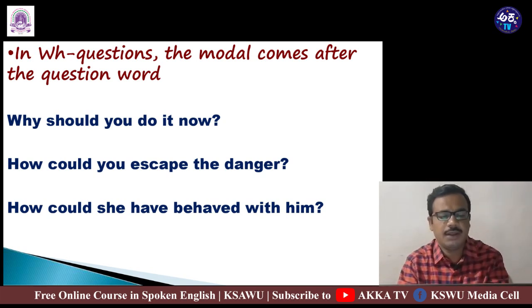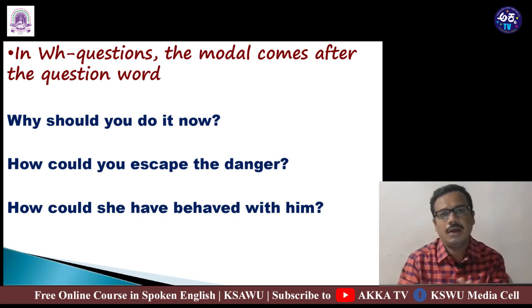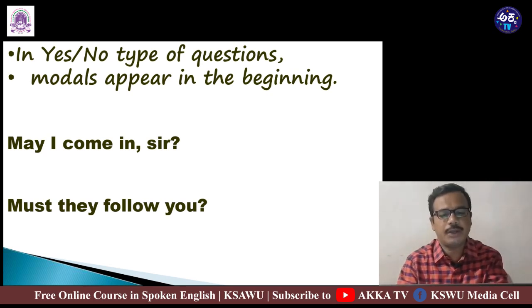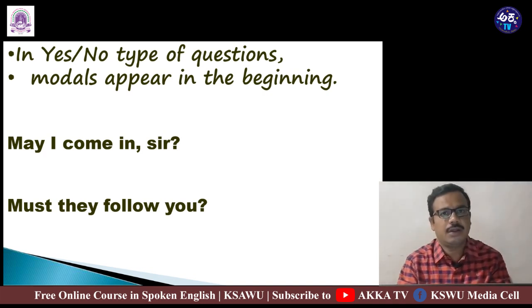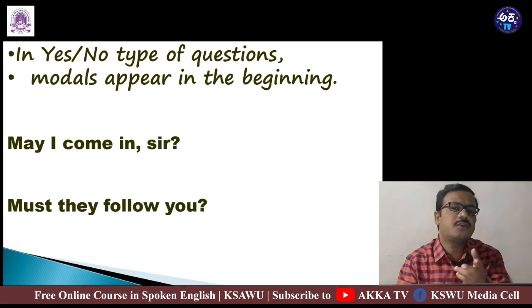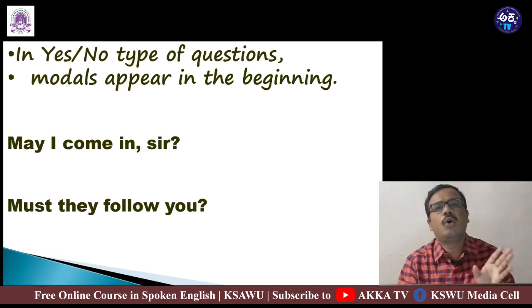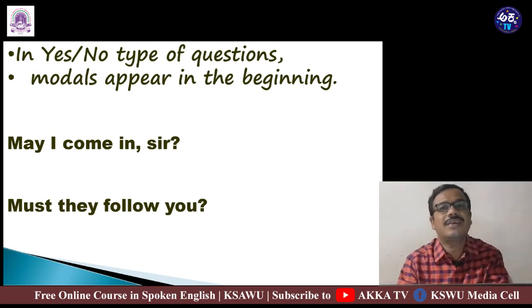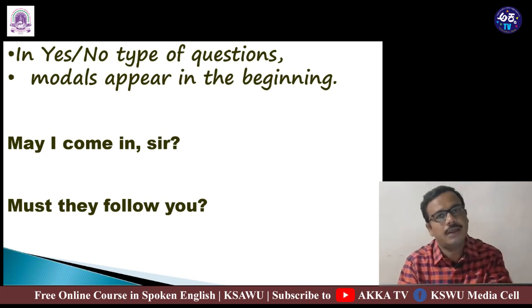'How could she have behaved with him?' — 'how' is the WH word, 'could' is the modal auxiliary. In yes/no type questions, since there is no question word, the modal appears at the beginning of the sentence. For example: 'May I come in, ma'am?' — 'may' appears first. 'Must they follow you?' — 'must' is the modal and comes first. So in yes/no questions, the modal auxiliary itself starts the question.